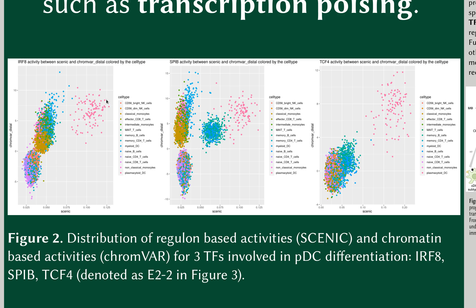This complicated relationship indicates a context-dependent activity of these transcription factors, or the presence of a poised state, in which a transcription factor might be present and bound to the DNA, but in the lack of a certain regulatory context is not capable of regulating the expression of its targets.